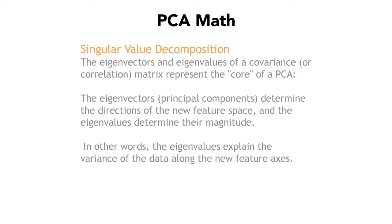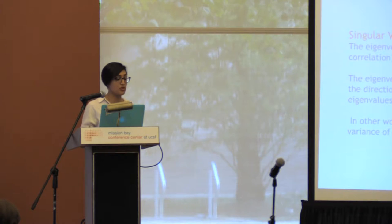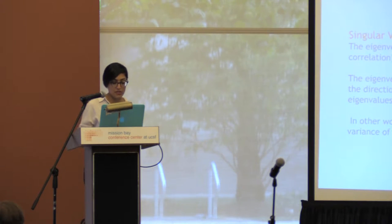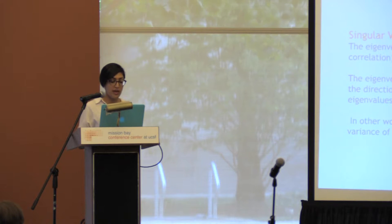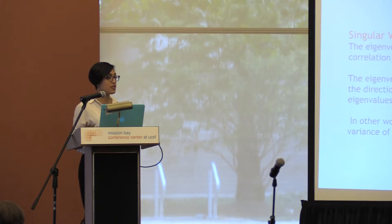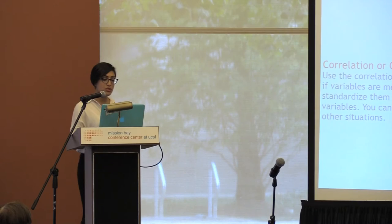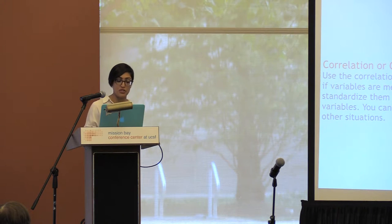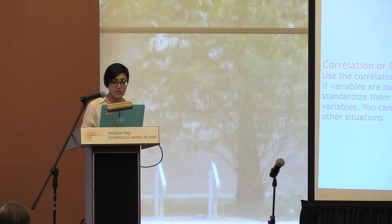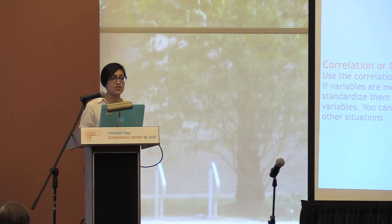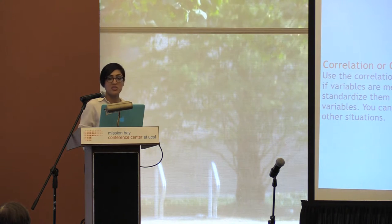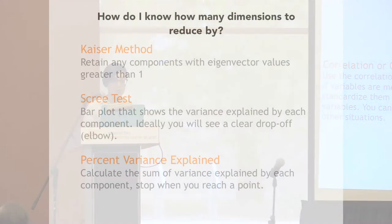The basics of the math behind PCA: it's singular value decomposition. The eigenvectors and eigenvalues of a covariance or correlation matrix are the core of PCA. Eigenvectors determine which direction your vector goes in the feature space, and eigenvalues are just a magnitude — specifically, the variance of the data along the new axes. On whether to use a correlation or covariance matrix: use a correlation matrix if your variables are measured on different scales and you want to standardize them, but you can use them almost interchangeably. Run both and see if they agree — that's usually the best approach.